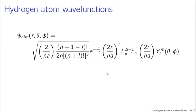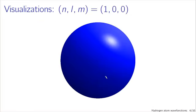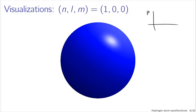It's hard looking at this to visualize what it actually looks like, so let's consider some sample cases. First, n, l, m equals 1, 0, 0 — this is the lowest energy ground state, and it looks rather boring. These visualizations show surfaces enclosing regions where the particle is likely to be found. Our radial wave function, if we plot it, is going to look like a decaying exponential. In the case of the spherical harmonics, l is 0 and m is 0, so the spherical harmonics are simply constant. Our wave function more or less looks like a function of radius only, which tells us the particle is likely to be found near the origin.